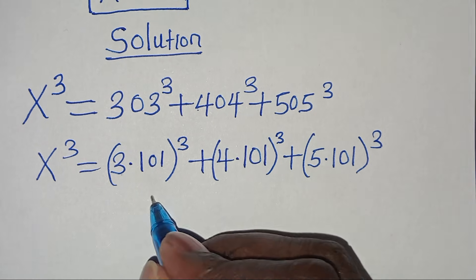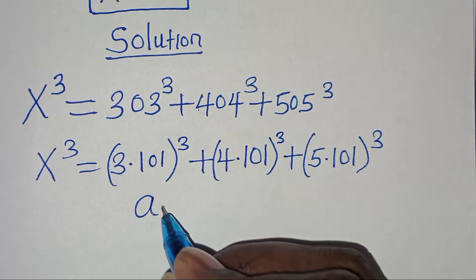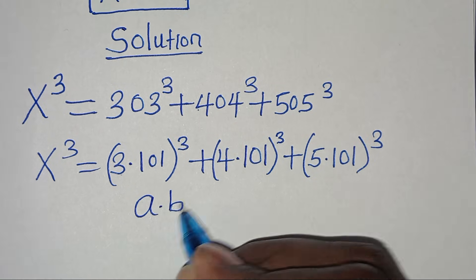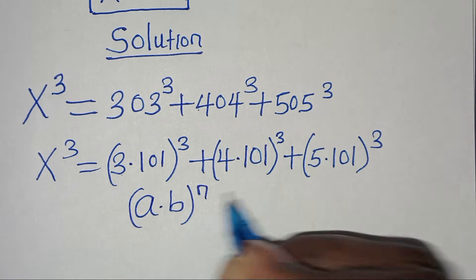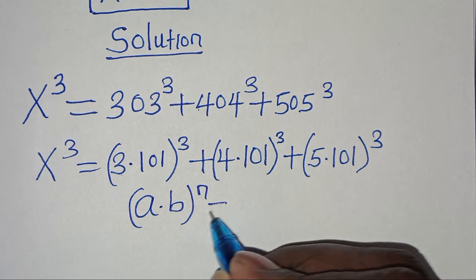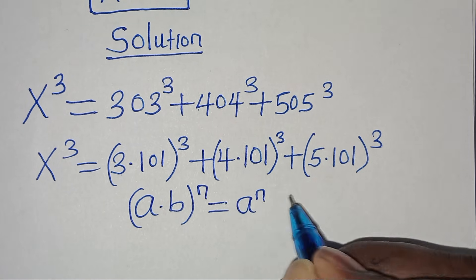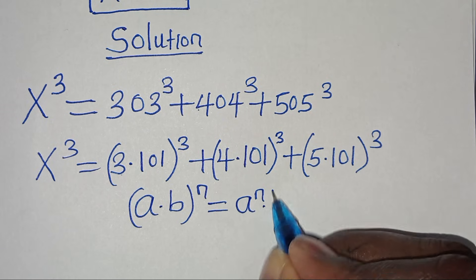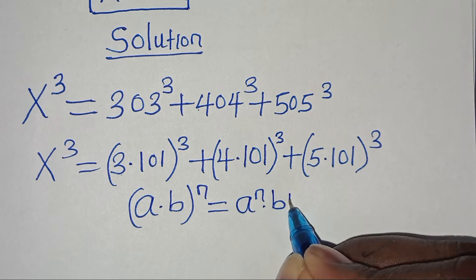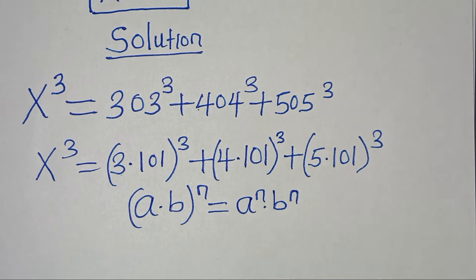This is in the form of a times b, raised to the power of n, which we can express as a to the power of n, times b to the power of n.